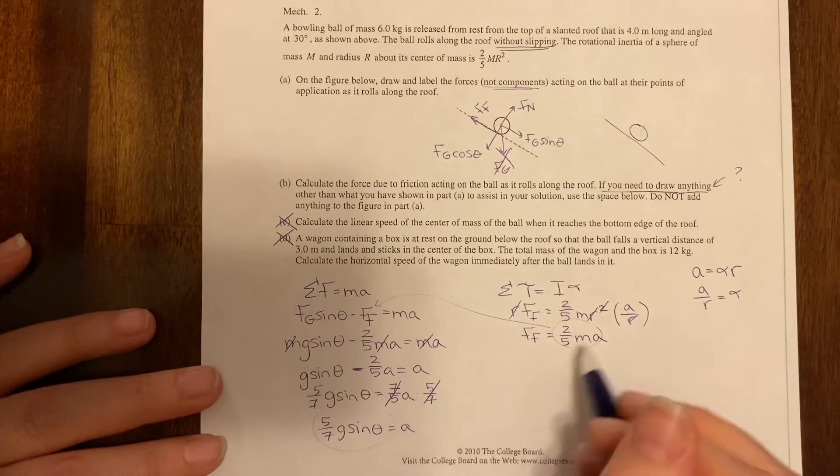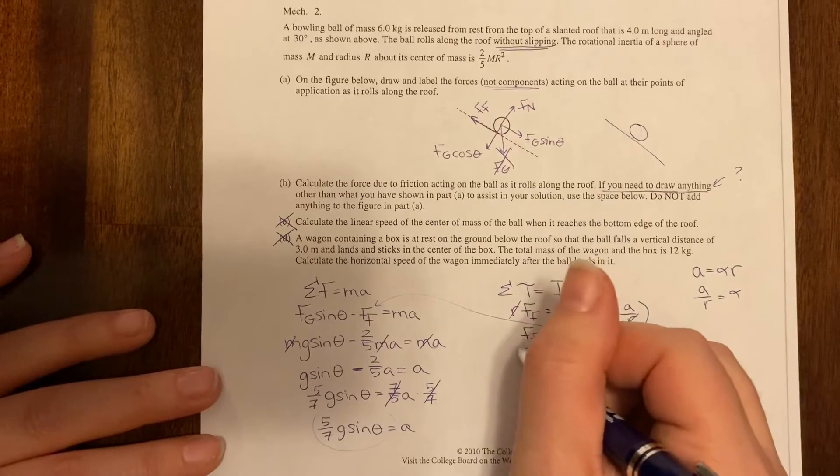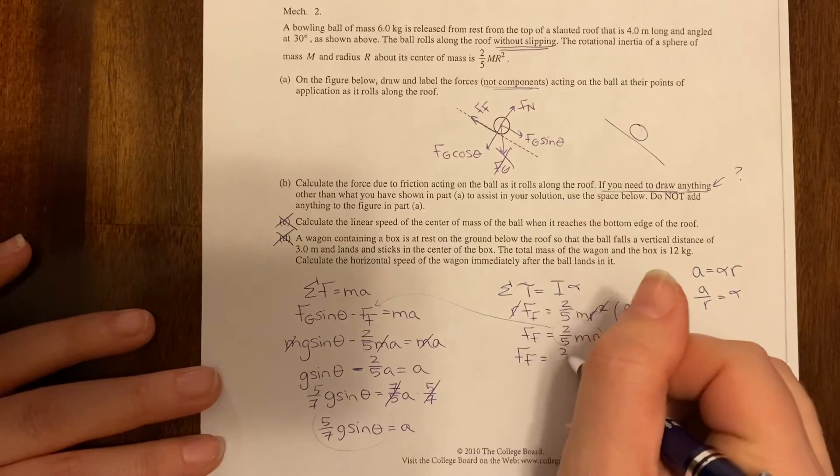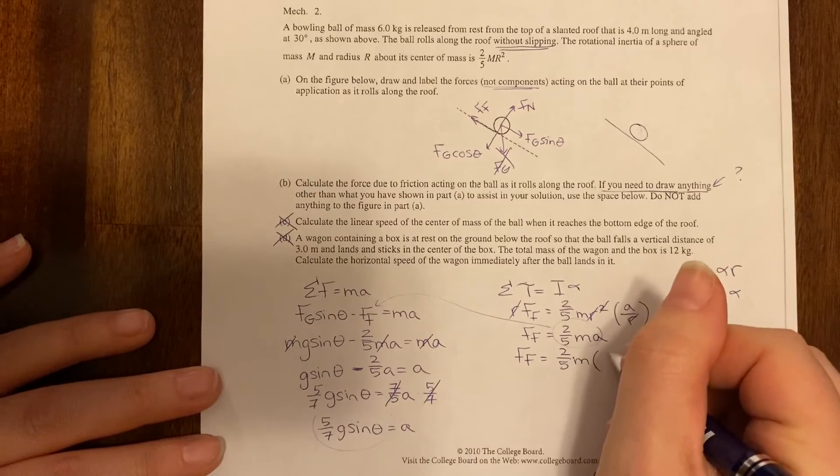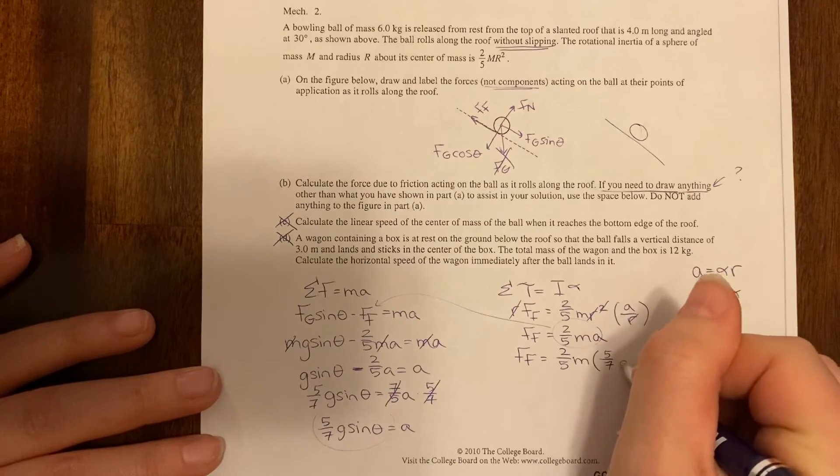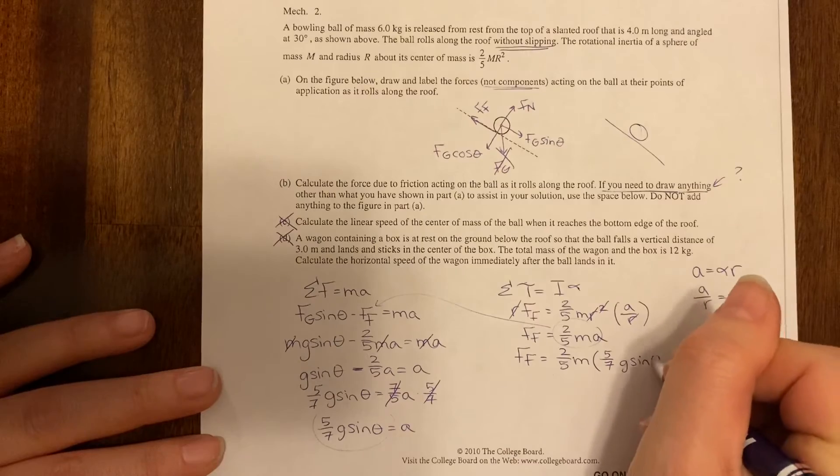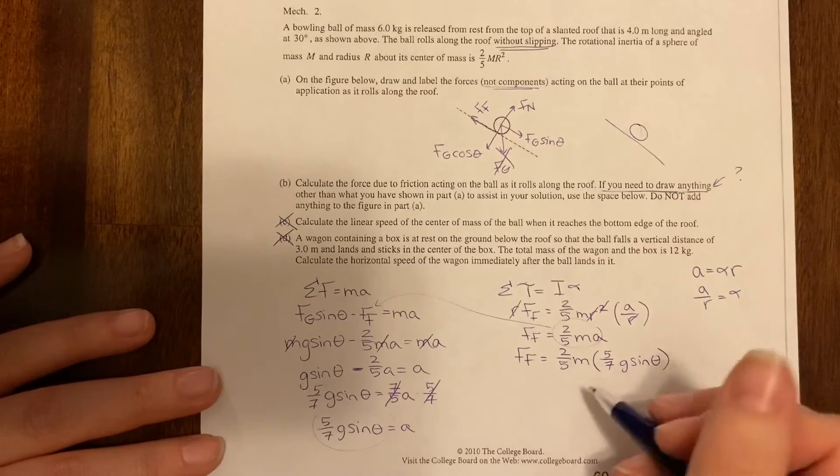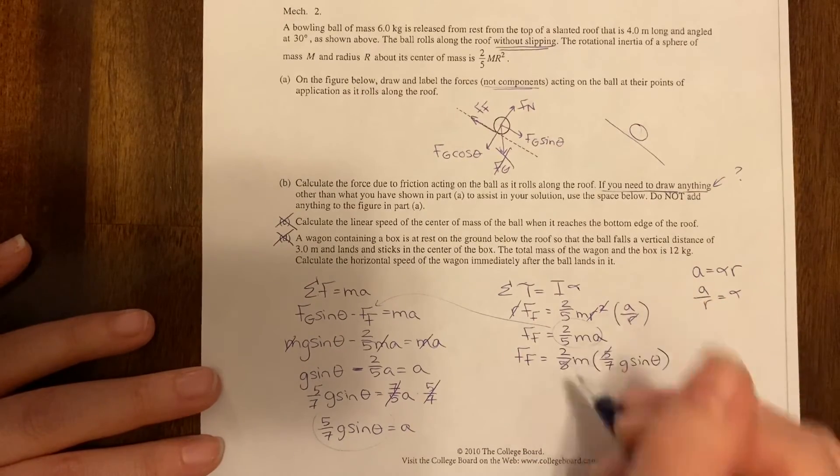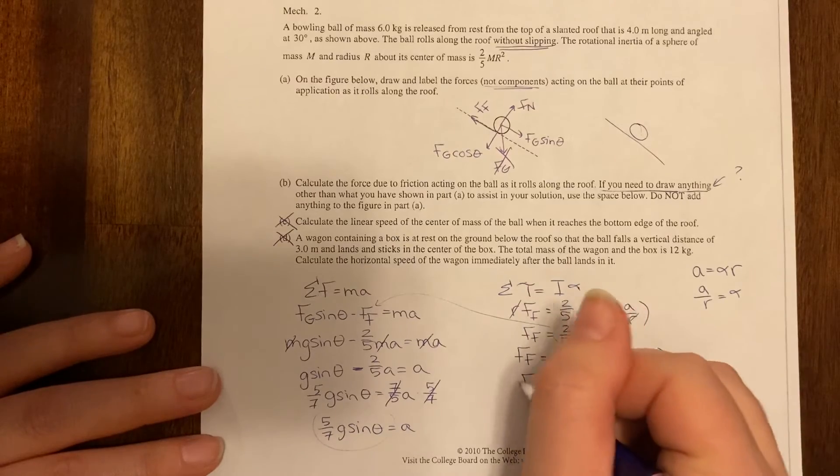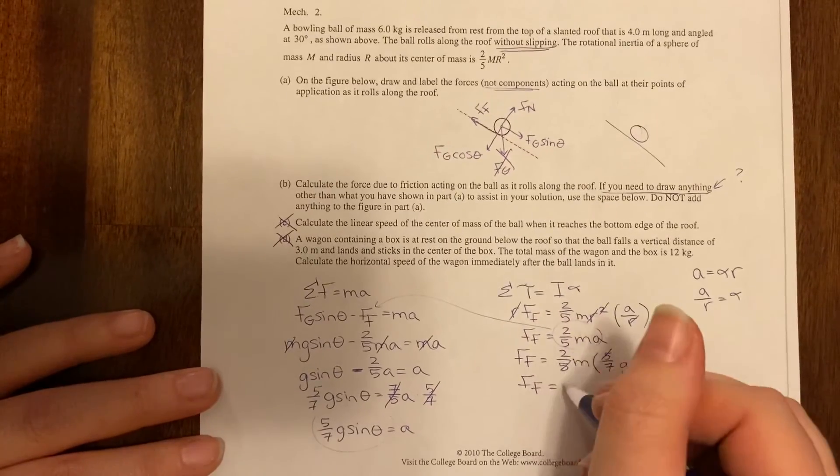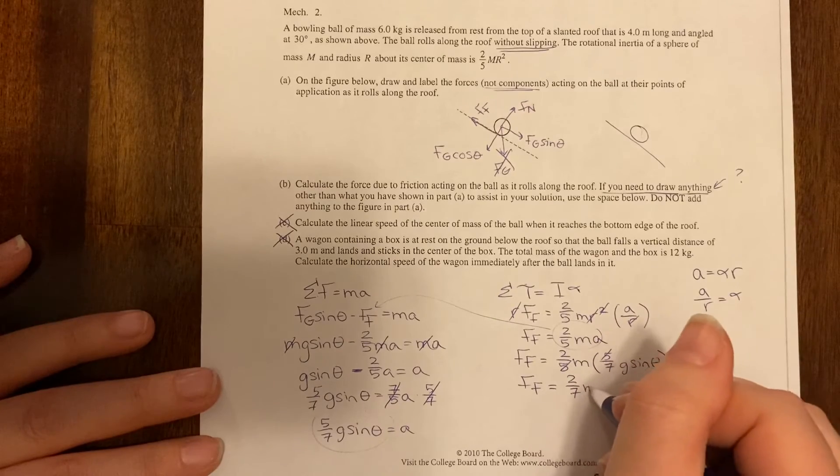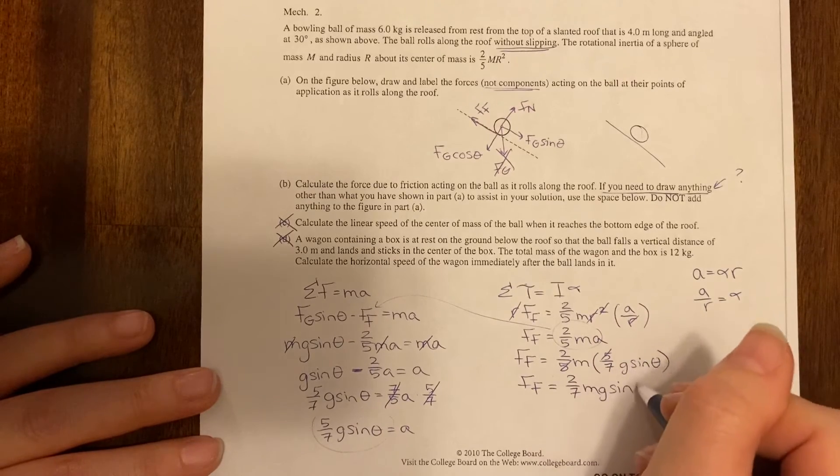So now I am going to take and plug this back in over here and you could do this a different way but this is just sort of my plan of attack. This gives me two-fifths M times five-sevenths G sine theta. Okay so I'm going to cancel out the fives and I'm going to get that the force of friction is equal to two-sevenths MG sine theta.